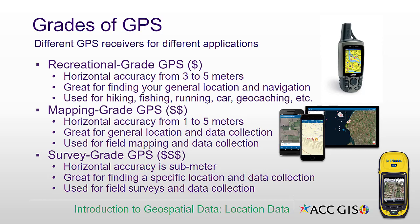Mapping grade GPS typically has a little higher horizontal accuracy, from one to five meters. It's great for not just finding your location, but also for collecting data. We typically use mapping grade when our application requires collecting a fairly accurate position, and we also need to collect attributes associated with that position in the field.